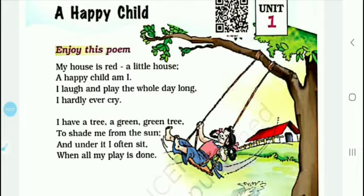This poem tells us about a happy child — ek khush mizaj bachche ke baare mein batata hai. 'My house is red, a little house' — mere ghar ka rang laal hai, chota sa ghar hai. As you can see here, there is a house whose color is red.